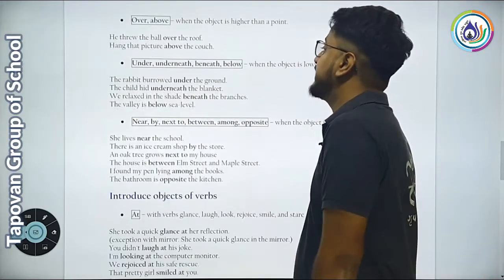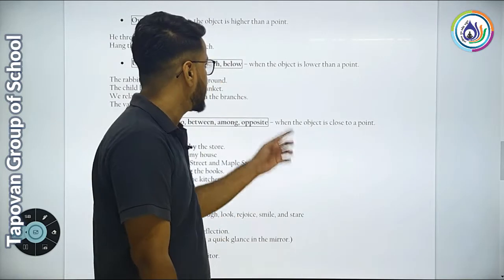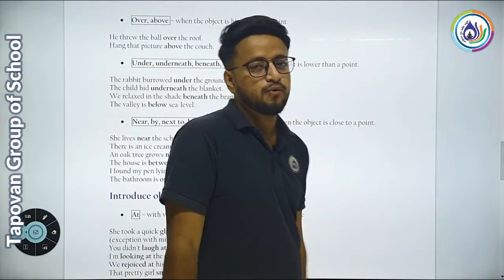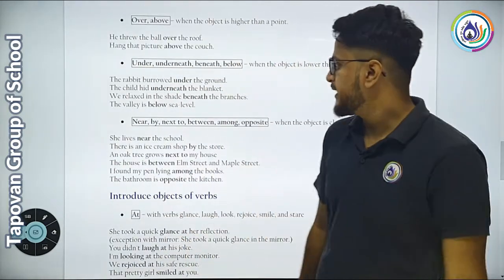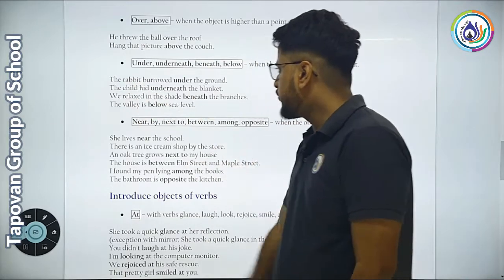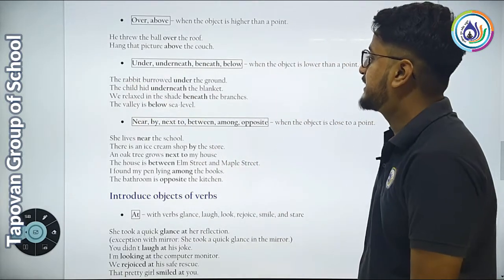Under, underneath, beneath, and below are used when the object is lower than a point. The rabbit burrowed under the ground. The child hid underneath the blanket.